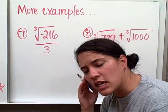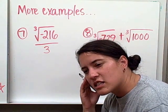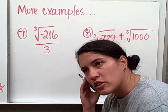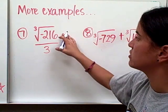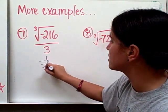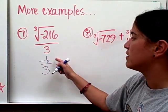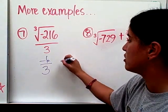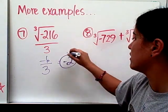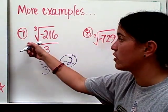So we're going to start with this. The cubed root of negative 216. I think it's 6. 6 times 6 is 36. 36 times 6 is 216. So this would be negative 6 over 3. And then when you divide negative 6 divided by 3, you get negative 2. That's the correct answer for number 7.